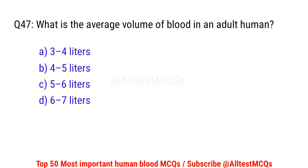Question number 47. What is the average volume of blood in an adult human? Right option is C. Five to six liters.